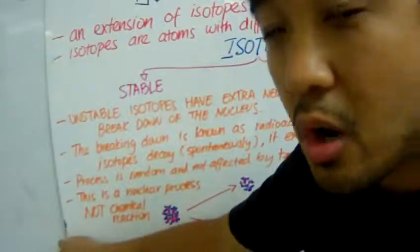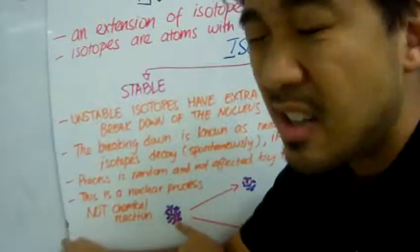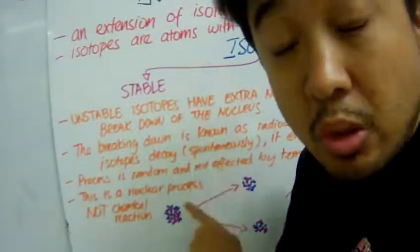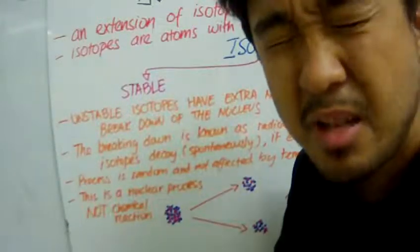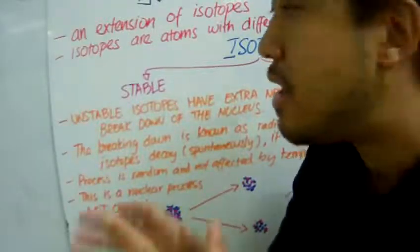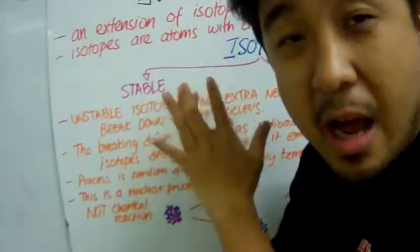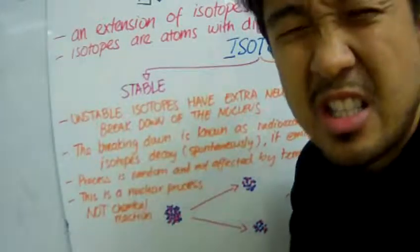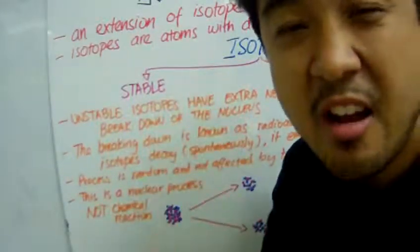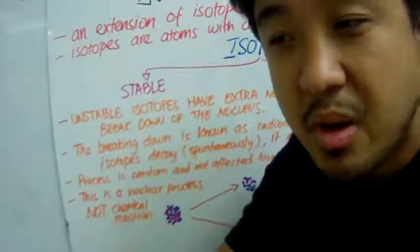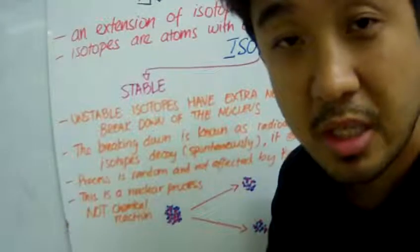It's very important to know that this process, the process of radioactive decay, is a nuclear process. This whole thing, where unstable isotopes break down through radioactive decay, is known as nuclear fission, where the unstable isotopes break down into smaller, simpler nuclei.